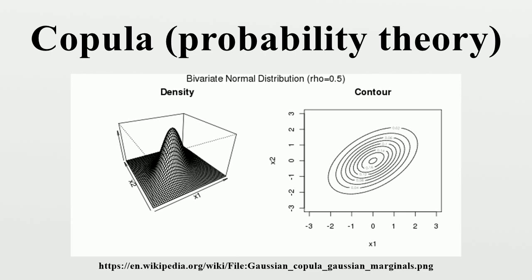The most important Archimedean copulas: the following tables highlight the most prominent bivariate Archimedean copulas with their corresponding generator functions. Note that not all of them are completely monotone, i.e., d-monotone for all d, but only for certain values of d.